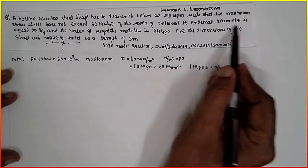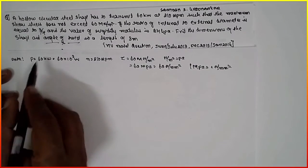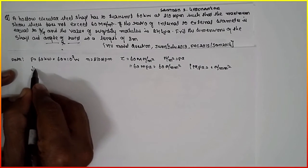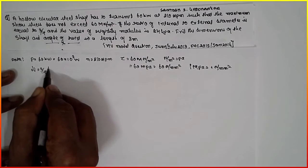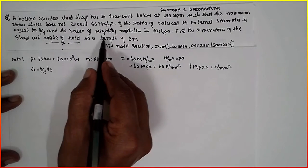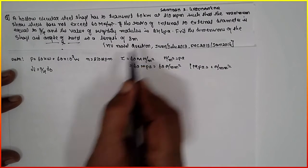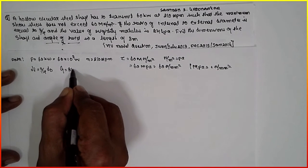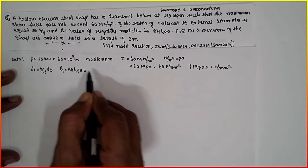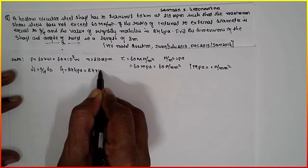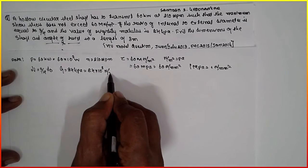If the ratio of internal to external diameter is equal to 3 by 4, Di is equal to 3 by 4 D0, and the value of rigidity modulus is 84 GPa, where G is equal to 84 GPa, which is 84 times 10 raised to 3 newton per mm square.